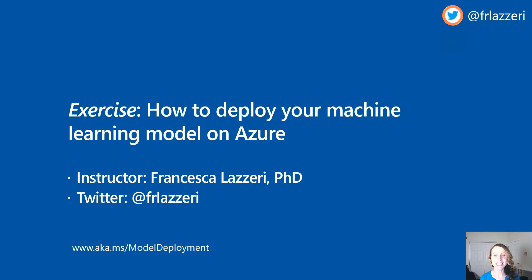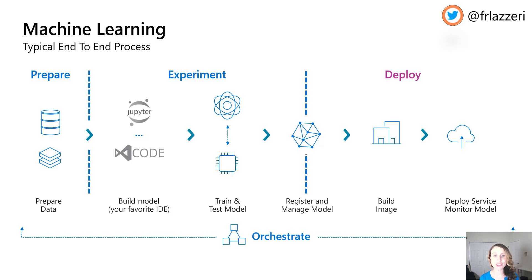Hi everyone. In this video, we are going to run an exercise together about how you can deploy your machine learning model on Azure. Machine learning deployment is the process by which a machine learning algorithm is converted into a web service. We refer to this conversion process as operationalization — operationalizing a machine learning model means that we transform it into a consumable service and embed it into an existing production environment.